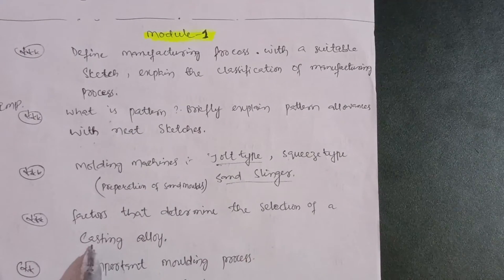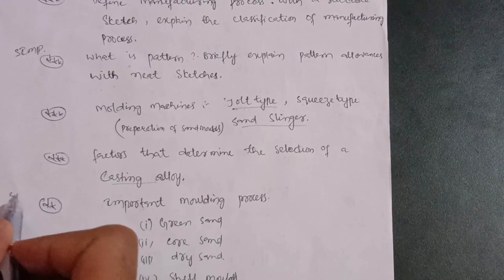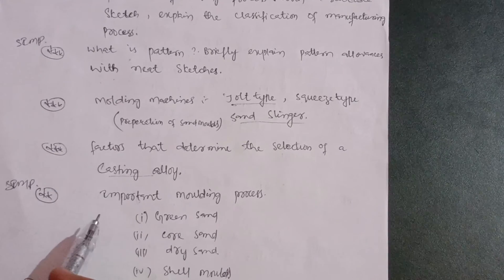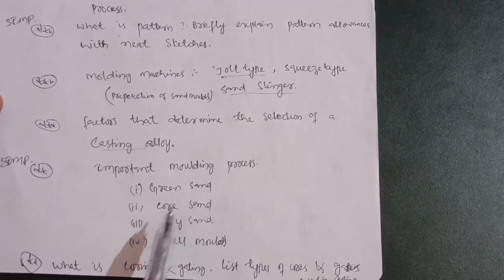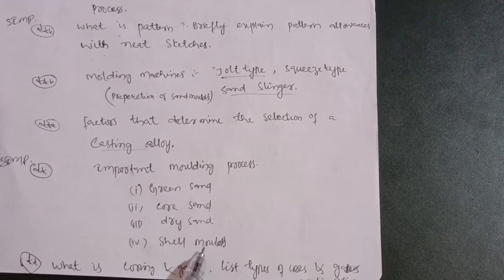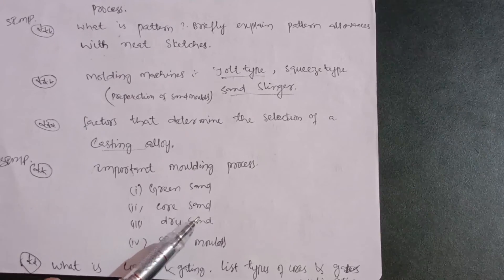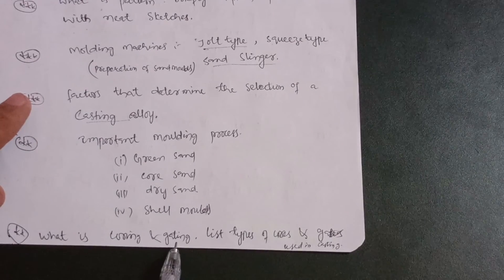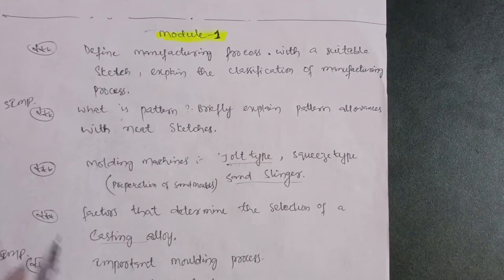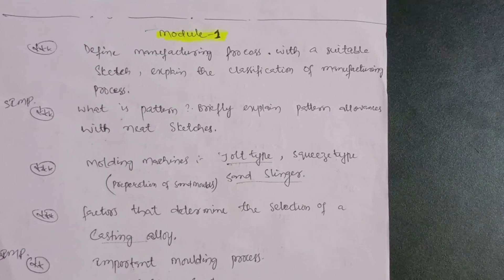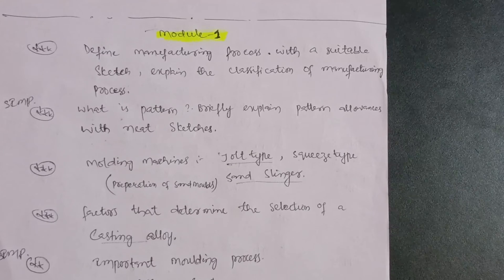Next: factors that determine the selection of casting alloy. Then a super important question on molding processes: green sand molding, coarse and dry sand molding, and shell molding — try to cover at least these four processes. Finally: what is coring and gating, and the types of cores and gates used in casting. These six questions are enough for Module 1.